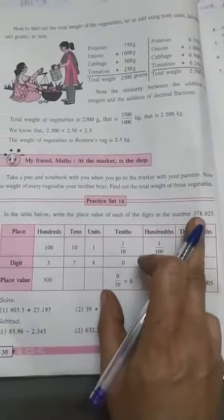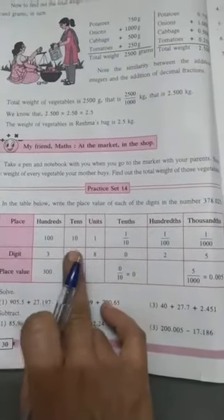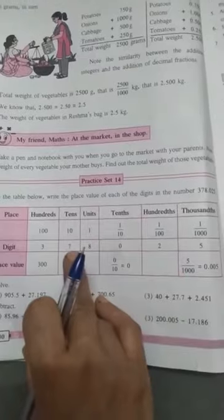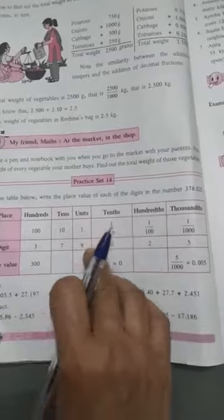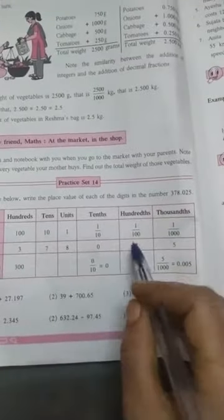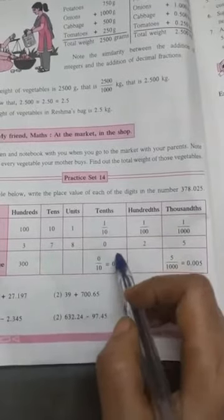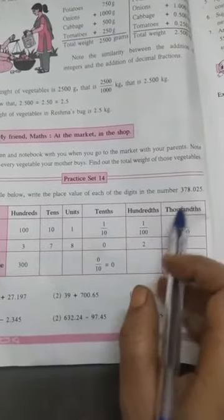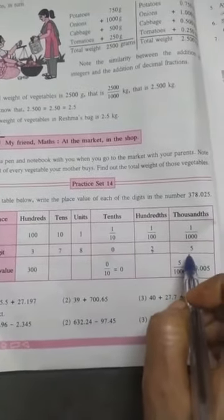Here, hundreds, 300, so 3 writing in hundreds place. 7 writing in tens place. And 8 writing in the unit place. And after decimal point, 0 is in the tenth place, and 2 is in the hundredth place, and 5 is in the thousands place.